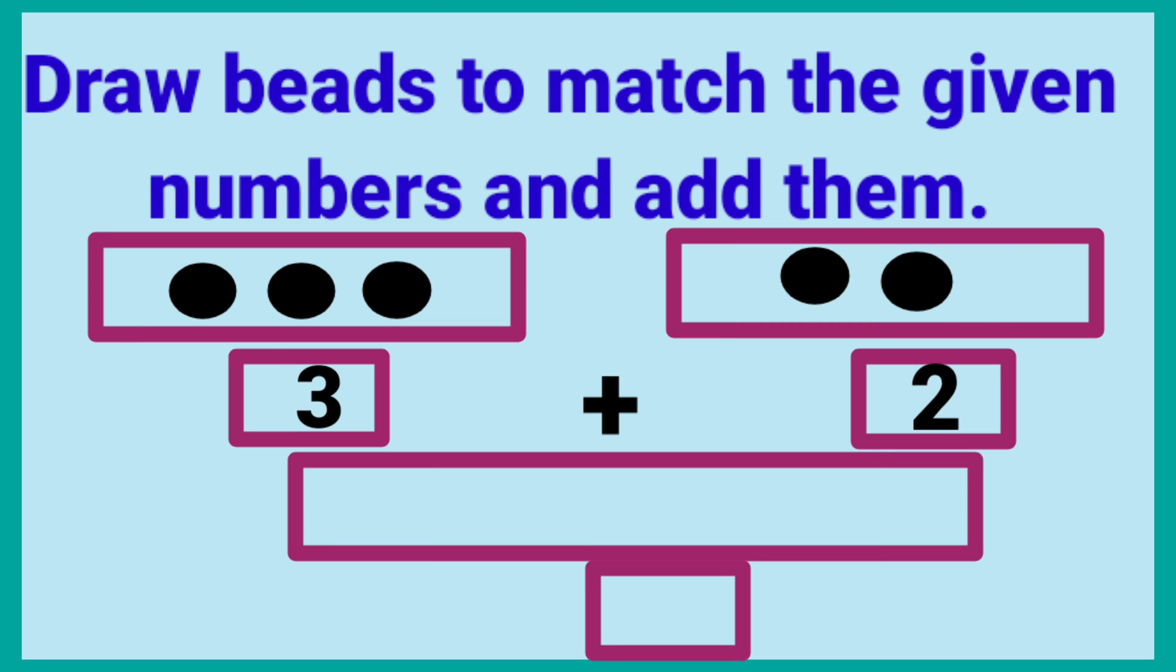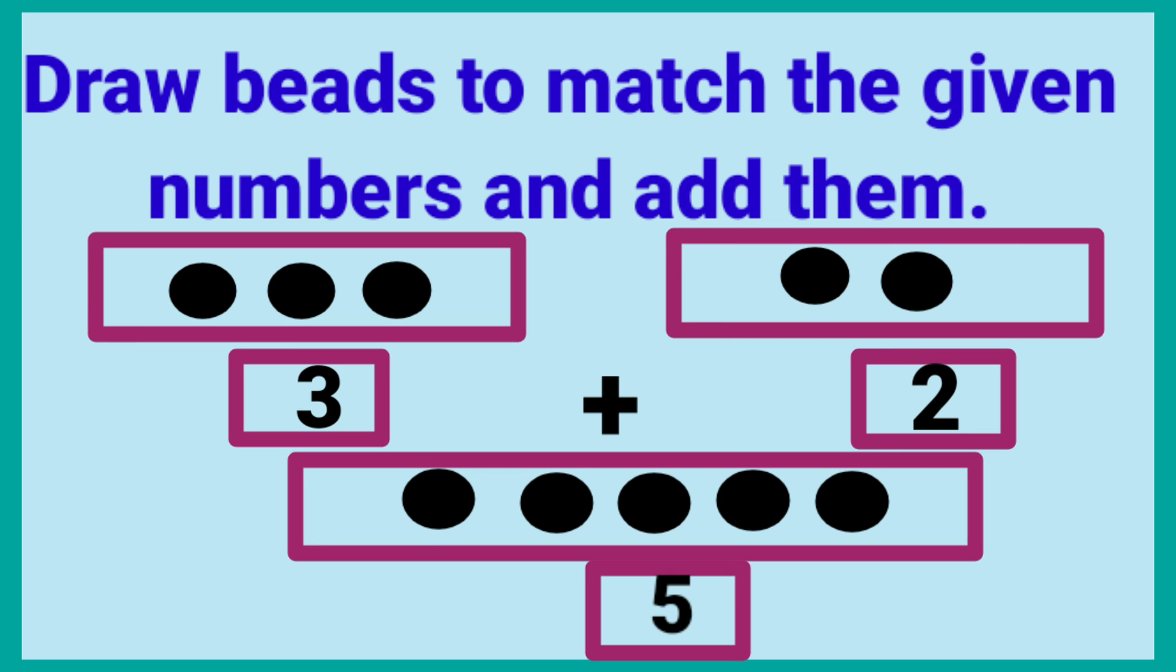Now, count three and two beads. One, two, three, four, five. Five beads. Three plus two is equal to five. Three plus two is equal to five.